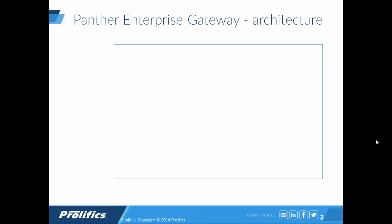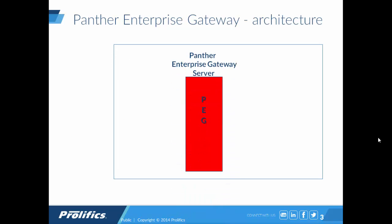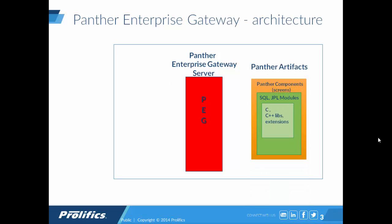Let's take a look at the architecture and the flow of the Panther Enterprise Gateway Server. The red box here represents your Panther Enterprise Gateway Server, PEG. The orange and green boxes represent your back-end, which are your Panther artifacts, consisting of your Panther components — screens, SQL, JPL modules, C, C++ libraries, and any other extensions.